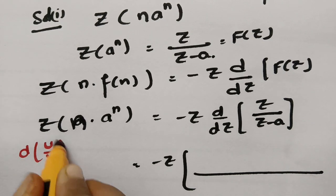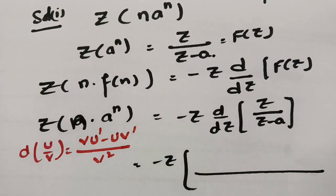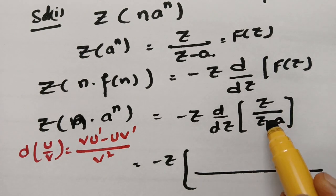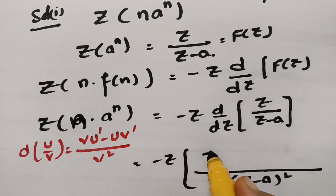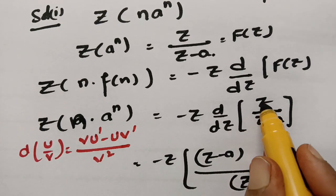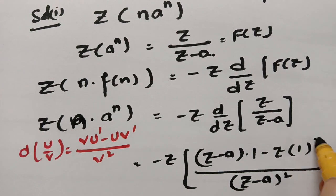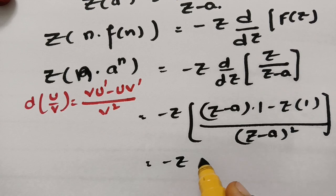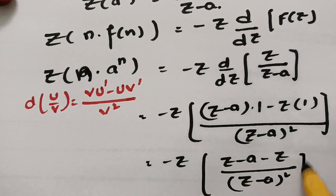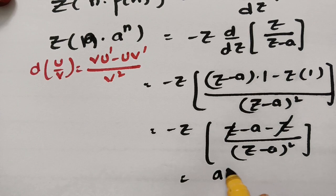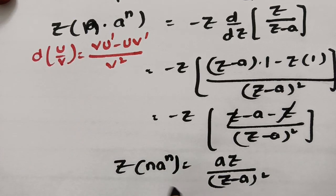The derivative of u/v is [v·u' − u·v'] / v². So we get v² = (Z−a)², then v·u' = (Z−a)·1, and u·v' = Z·1. This gives minus z times [(Z−a) − Z] / (Z−a)². Cancelling and multiplying, the answer is aZ/(Z−a)². So the Z-transform of n·aⁿ is aZ/(Z−a)².